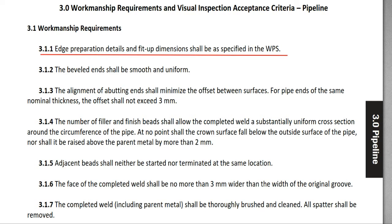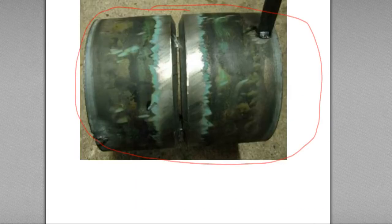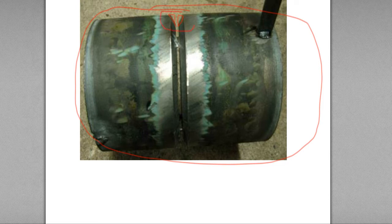3.1.2: The beveled end should be smooth and uniform. This beveled part should be uniform — the triangle shape should be uniform, so that the whole joint forms a uniform formation.